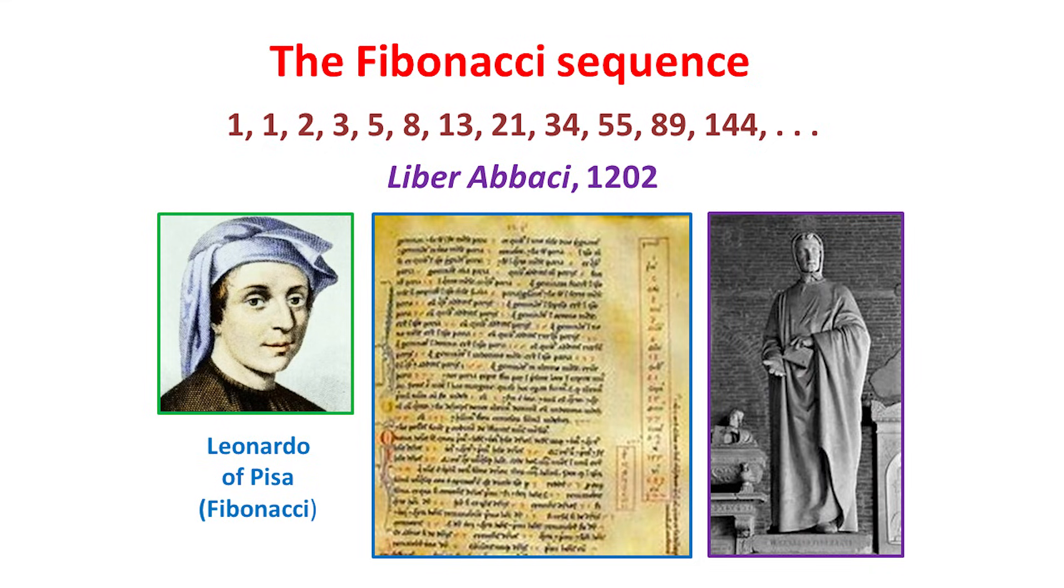Closely related to the golden ratio is the Fibonacci sequence of numbers. This is a sequence beginning with 1, 1, 2, 3, in which each successive number is the sum of the previous two. For example, 13 is 8 plus 5, and further on, 144 is 89 plus 55.